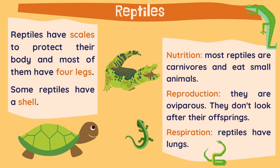Let's go now to the last of the five groups: reptiles. Reptiles have scales to protect their body and most of them have four legs. Also, some reptiles have a shell, like the turtle. Most reptiles are carnivores and eat small animals. For reproduction, they are oviparous. A curious fact: they don't look after their offspring — they just protect their eggs until they hatch, and then they leave the offspring alone. And for respiration, reptiles have lungs.